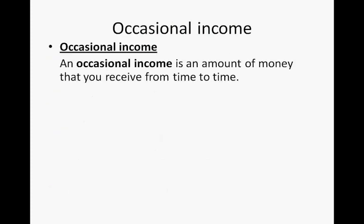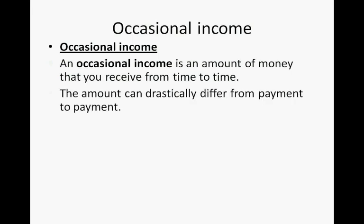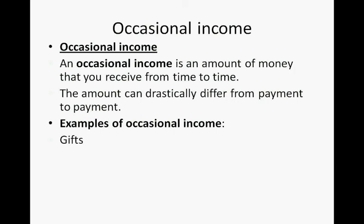Occasional income is the amount of money that you receive from time to time. The amount can drastically differ from payment to payment, and it is not always expected. Examples of occasional income include gifts — you can't rely on them — and inheritance, which although often a sad occasion, is also a welcome income.